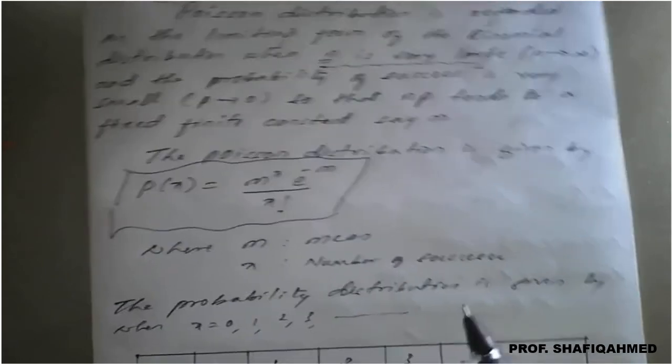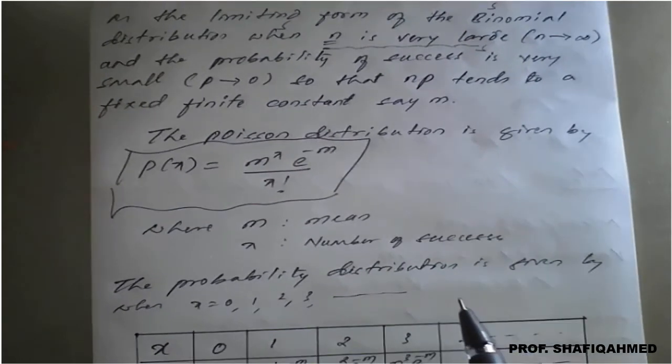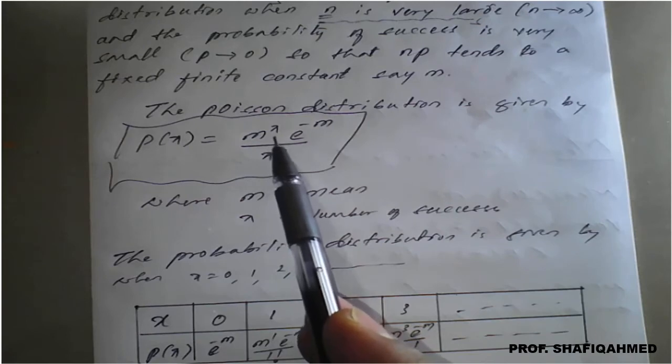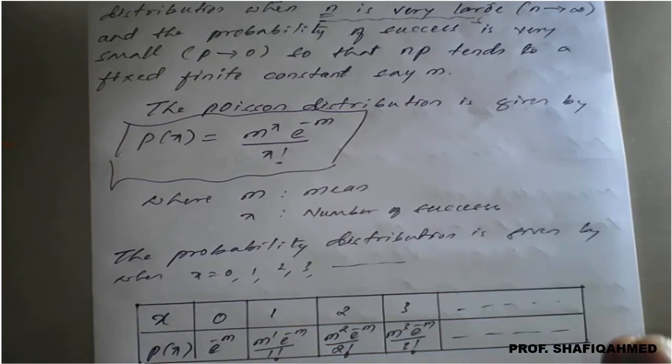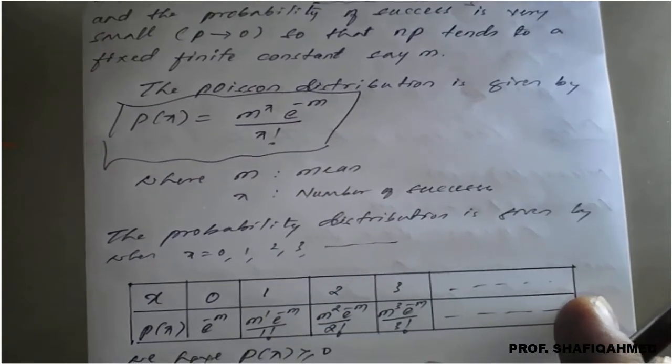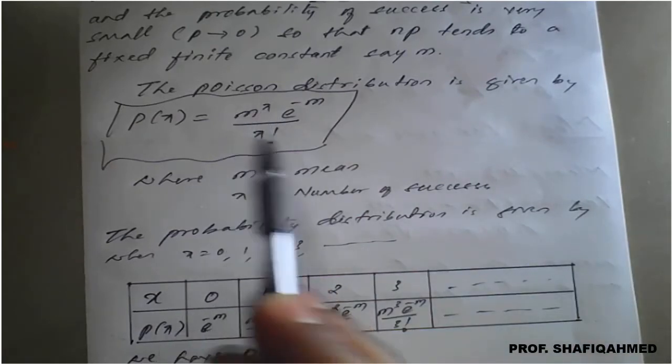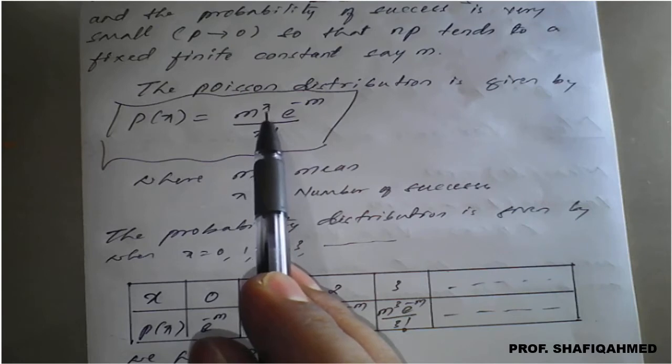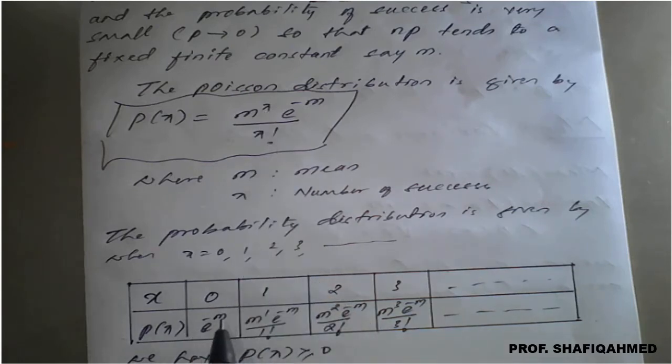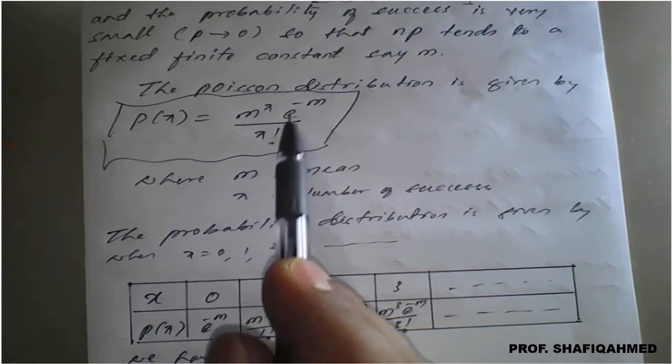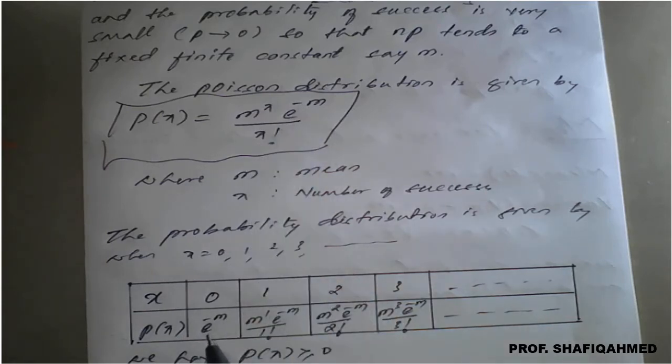The probability distribution for Poisson distribution is given by: in this P(x), you replace x from 0, 1, 2, 3. We will get a probability distribution as - when x is 0, replace x equals 0 here. If x is 0, at that time we will get e raised to minus m, because m raised to 0 is 1, and 0 factorial is 1, so e raised to minus m only is going to be left. When x is 1, it will become m raised to 1, e raised to minus m, divided by 1 factorial.